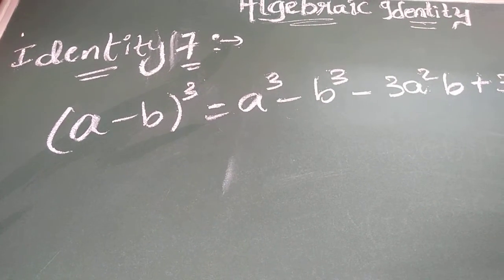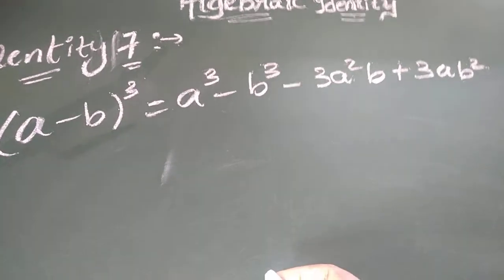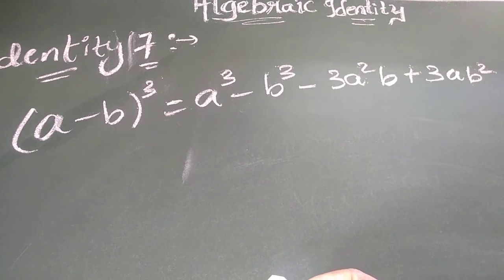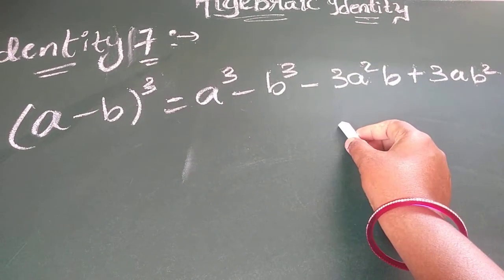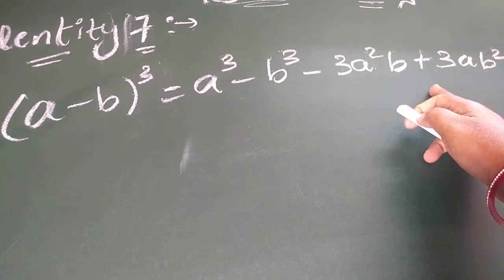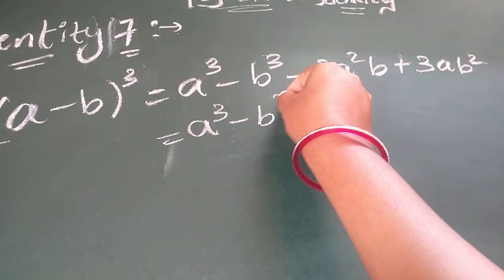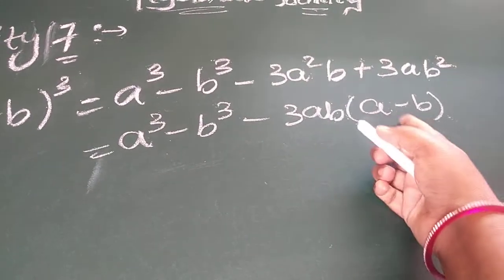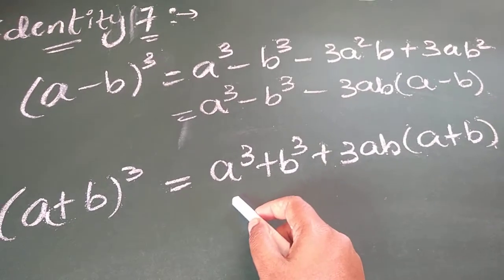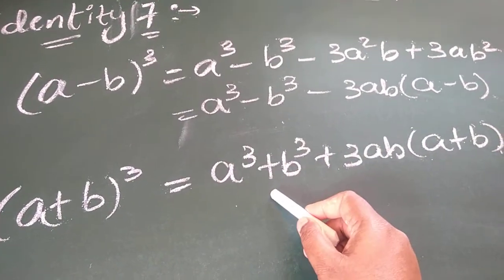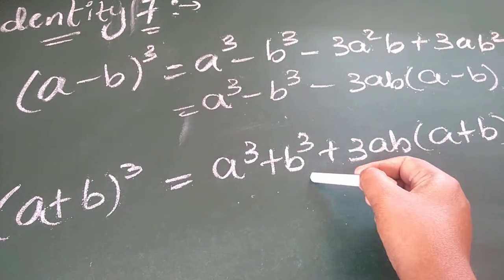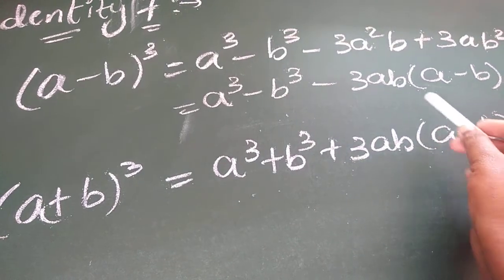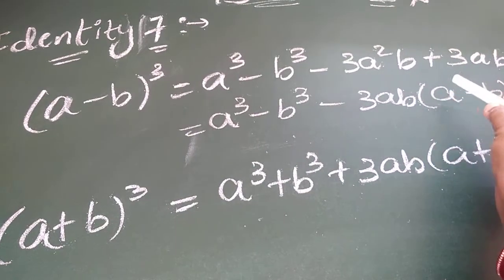Your identity number 7 — I am not going to expand this; you can try it as I did for a plus b whole cube. a minus b whole cube equals a cube minus b cube minus 3a square b plus 3ab square. The plus sign arises because when we take out the common factor a cube minus b cube minus 3ab, a minus b remains inside the bracket, and minus into minus becomes plus. So identity 7 is: a minus b whole cube equals a cube minus b cube minus 3ab into a minus b, or equivalently a cube minus b cube minus 3a square b plus 3ab square.